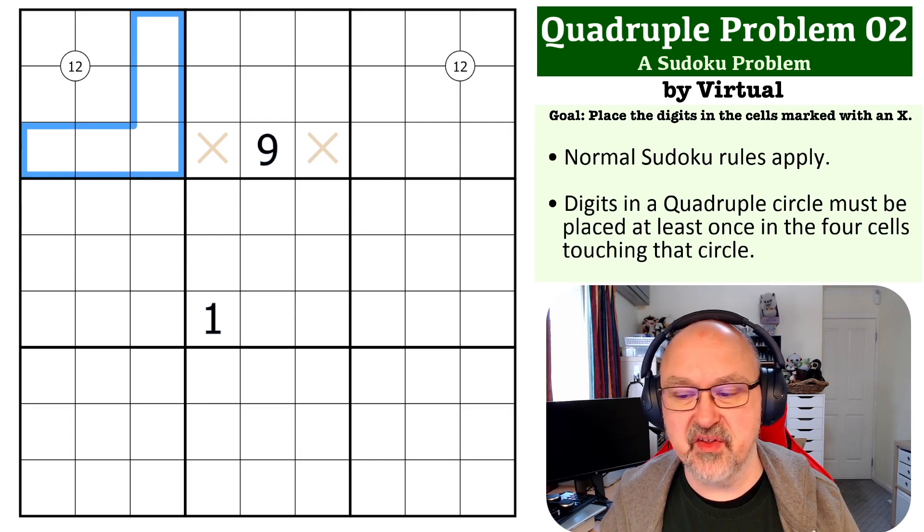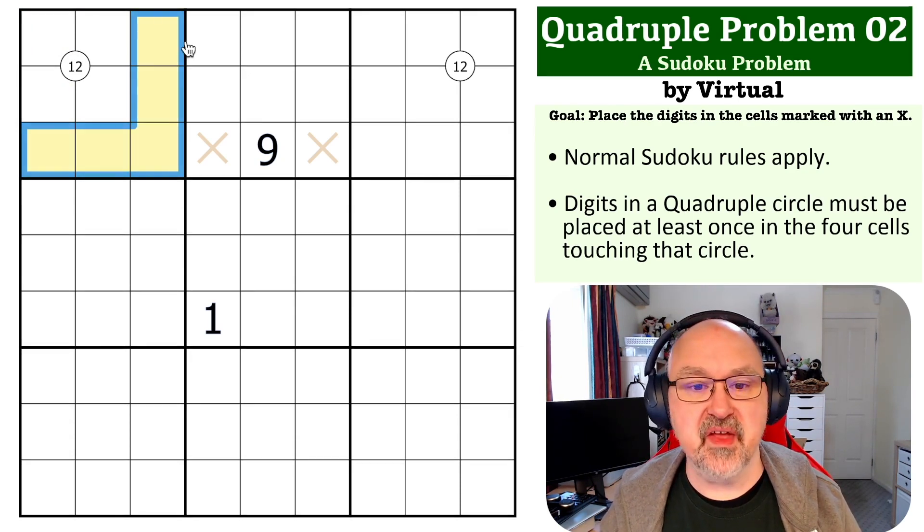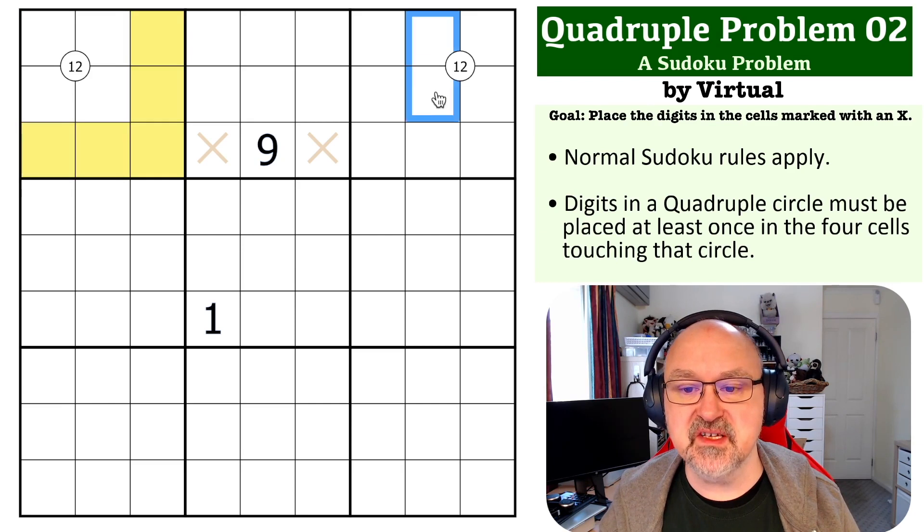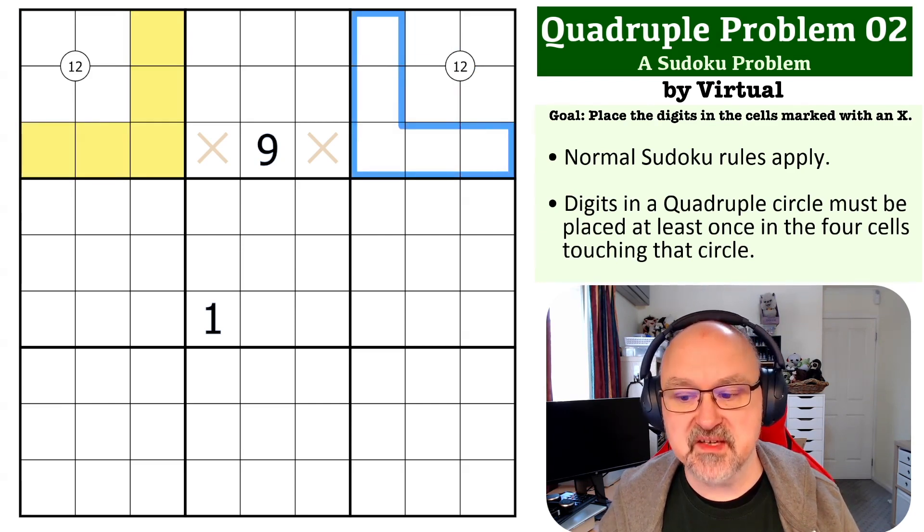And I'm actually going to highlight, even though you can kind of do this in your head. So they cannot be placed in any of those cells. And similarly, over here, the digits one and two must be placed here. So they cannot be placed in any of those cells.